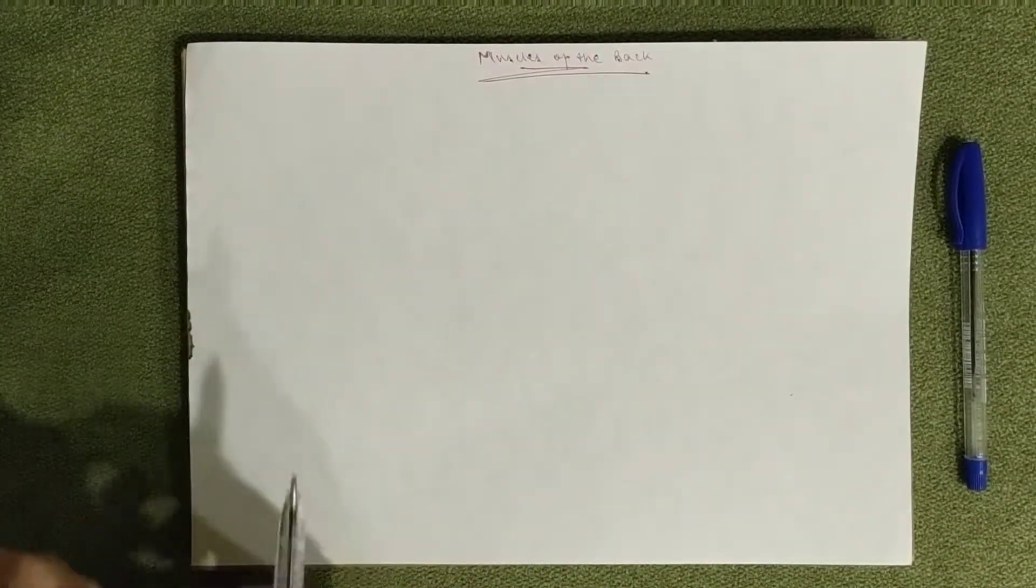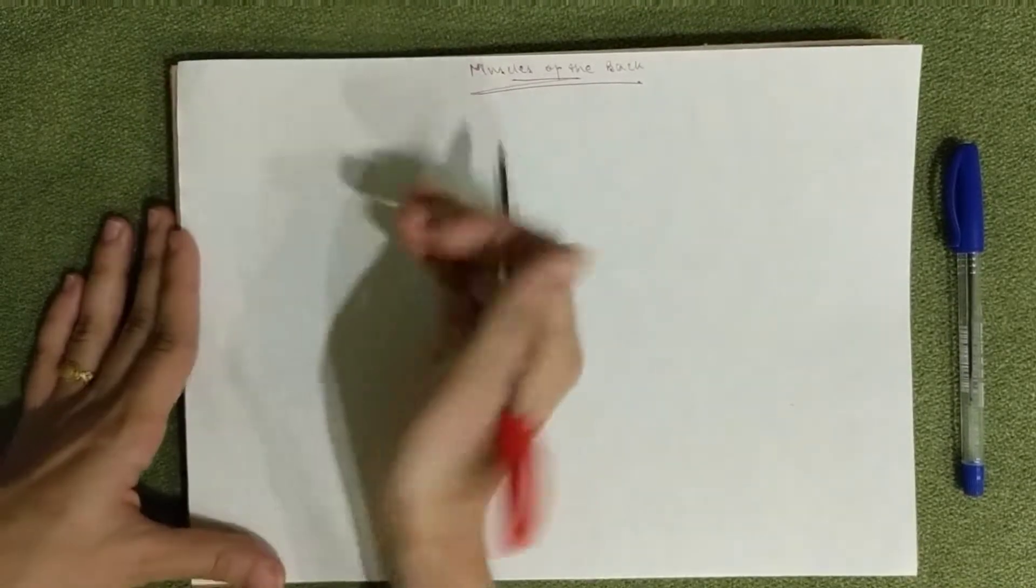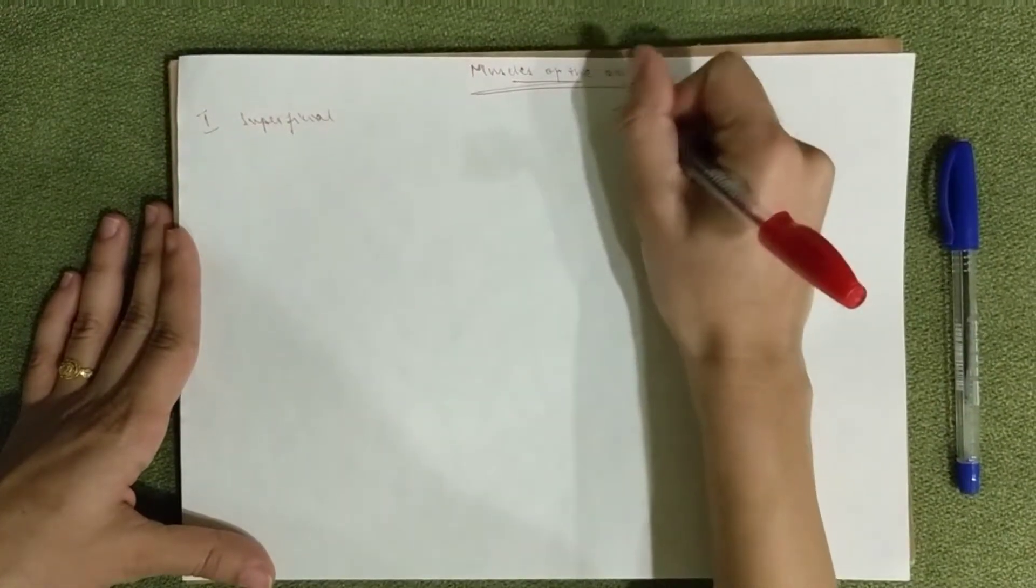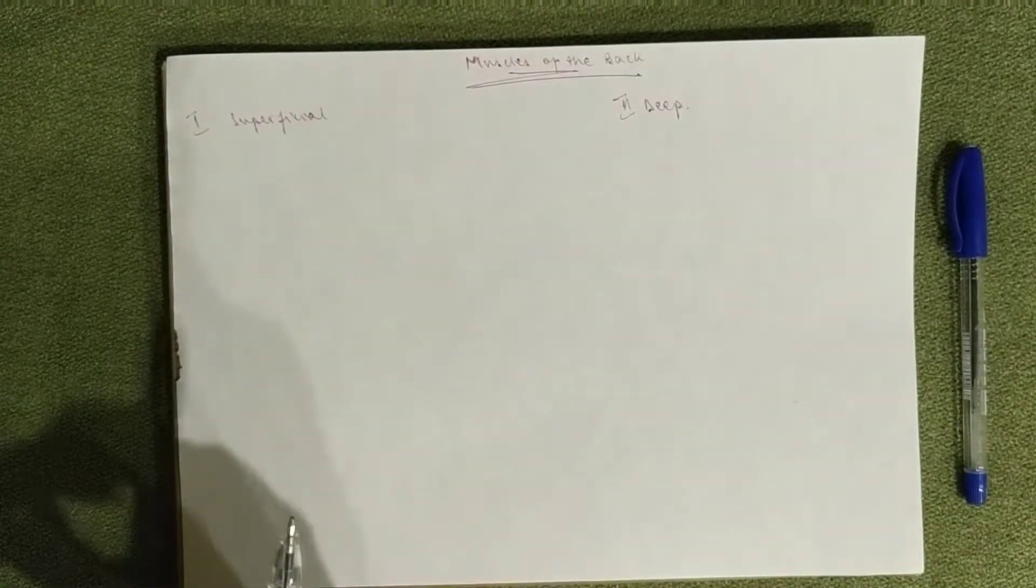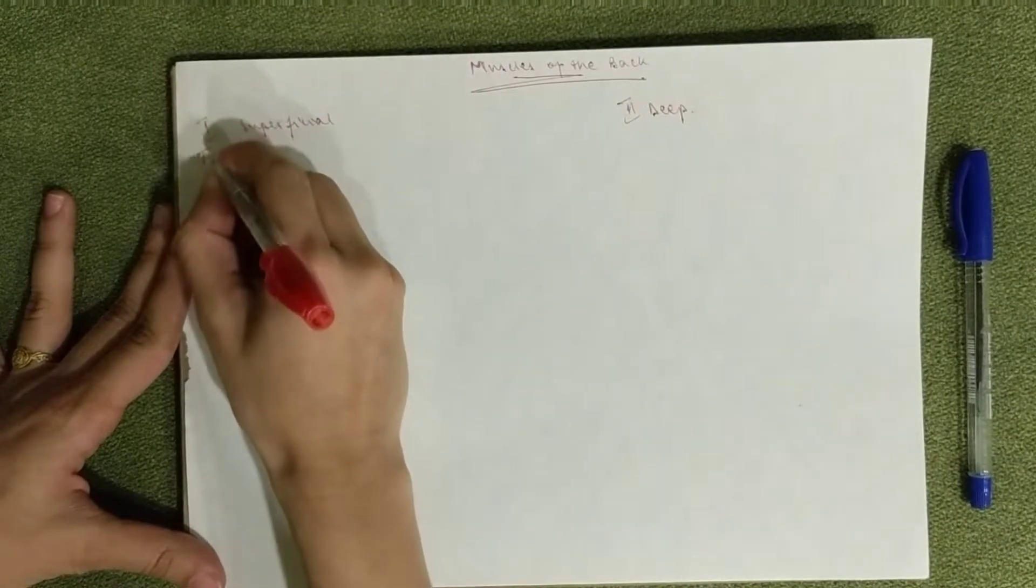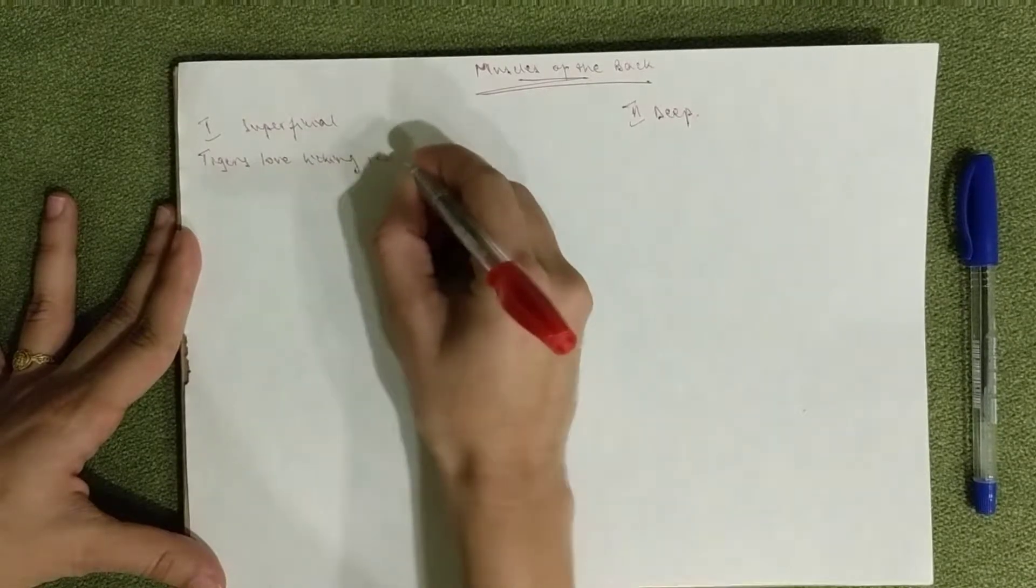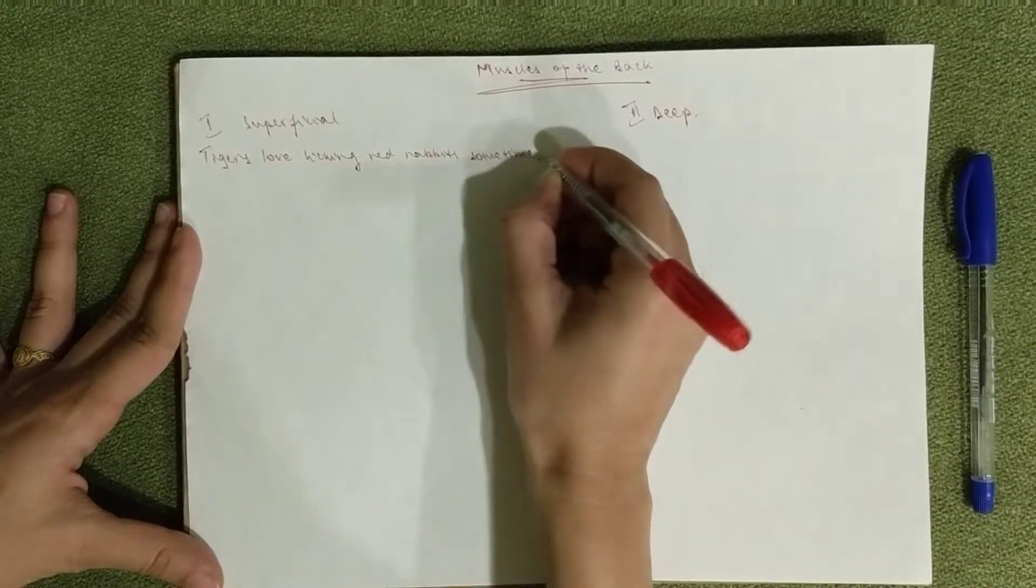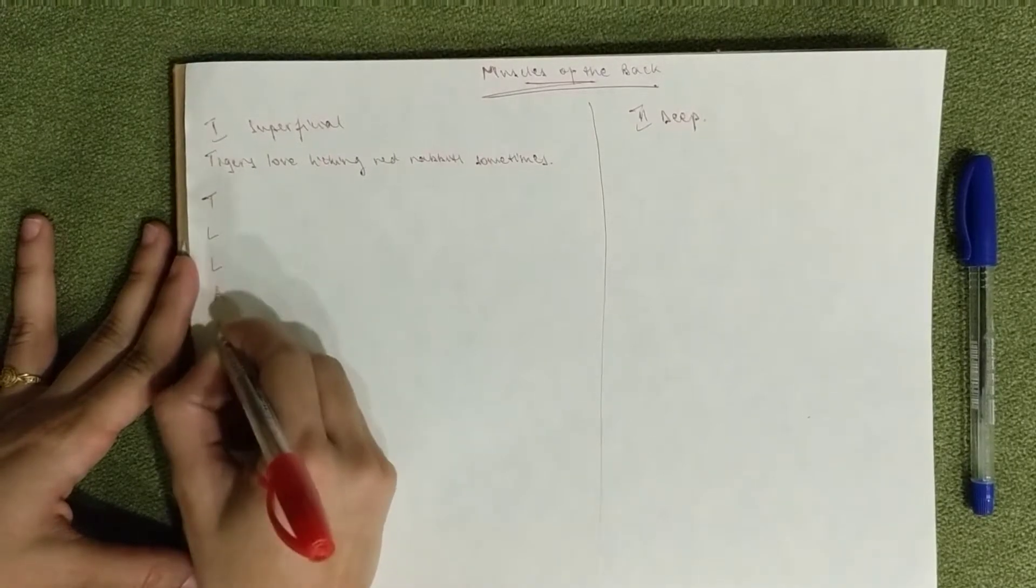Hey guys, it's Leila. Today we're covering the muscles of the back. You've got two layers: the superficial and the deep. Let's start with the superficial and then move on to the deep. There are quite a lot of muscles, so it might be a bit of a difficult topic. Hopefully I can make it easy with mnemonics. The first one for superficial is: tigers love licking red rabbits. It's a bit of a weird one.